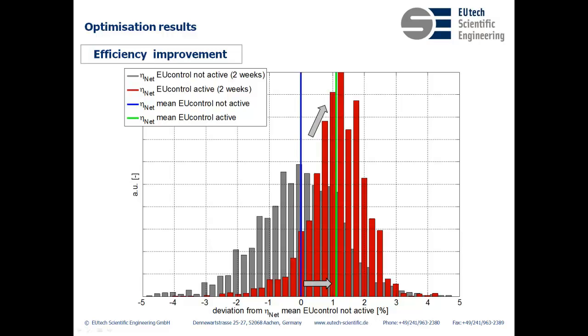Here is the improvement in efficiency. The overall efficiency increased by 1%, and the standard deviation from the mean decreased, indicating a more stable operation. Now, 1% might not seem that significant, but because of the size of the power plant, it is significant when one looks at it from a financial standpoint, which we will discuss in a moment.